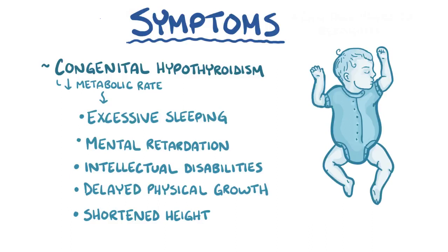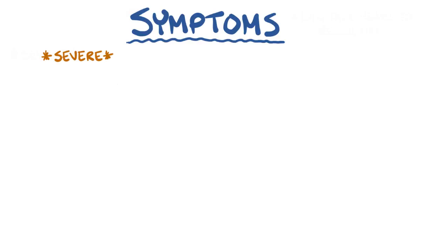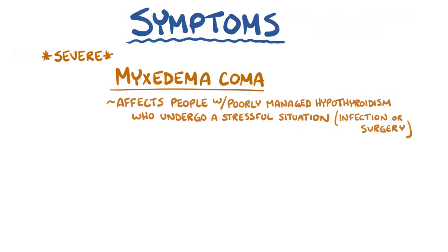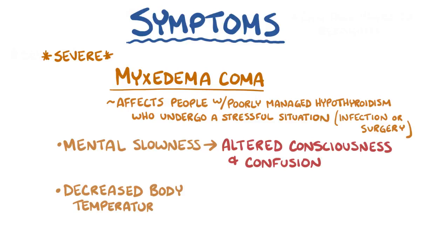There's also a severe, life-threatening form of hypothyroidism called myxedema coma, which affects people with poorly managed hypothyroidism who undergo a stressful situation like a serious infection or surgery. For example, mental slowness turns into altered consciousness and confusion, and decreased body temperature turns to hypothermia.